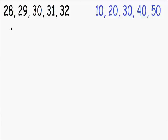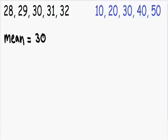Let's take a look at this data set in black. We have 28, 29, 30, 31, 32. If we took the average or the mean of this data set and added all of these numbers together and then divided by 5, we would get an average of 30. Most of you probably could do that just by looking at it.